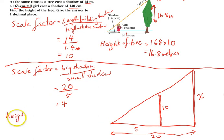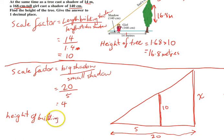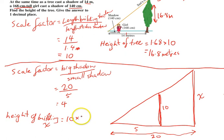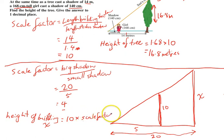The height of the building — that is, x — is equal to the height of the stick, which is 10, times the scale factor of 4, which gives us 40.